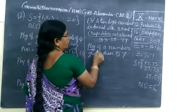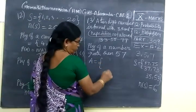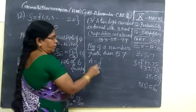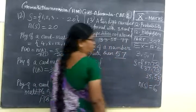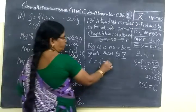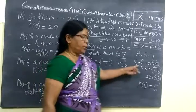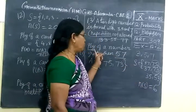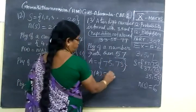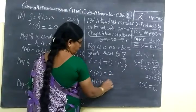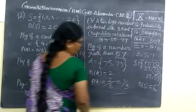Now we want to find probability of a number greater than 57. So A equals event of getting number greater than 57. Greater than 57 would be 75 and 73. So N(A) equals 2. Therefore P(A) equals N(A) by N(S). So 2 by 6 equals 1 by 3.